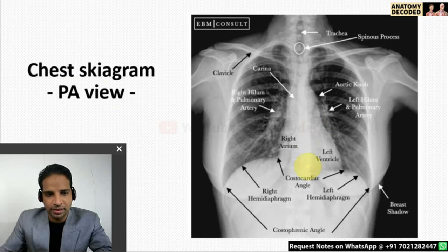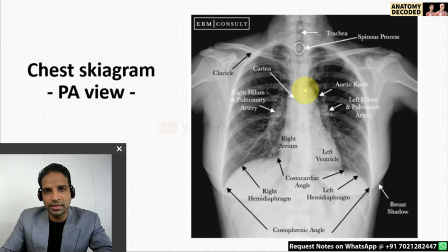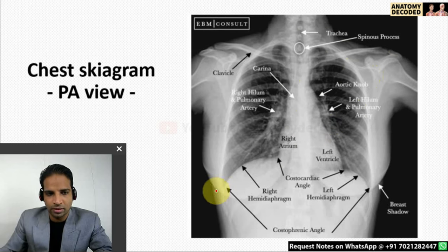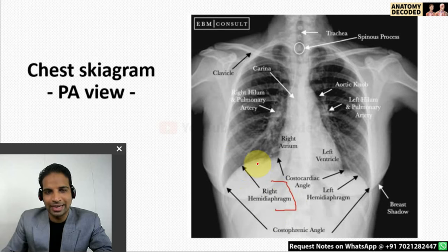Let us identify the various structures in this labeled image. When describing the chest skygram we start: this is the plain skygram, posterior-anterior view of the chest region showing bony shadows — ribs, clavicle, scapula, humerus, and vertebral body. Then soft tissue shadows: the heart with its right and left border. Specific structures include the costophrenic angle, cardiophrenic angle, the domes of the diaphragm. The right hemidiaphragm is at a slightly higher level because of the large liver beneath it.